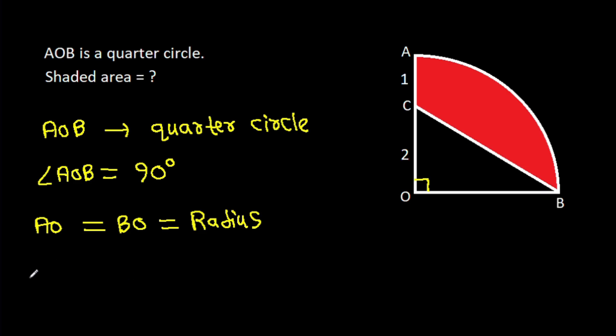AO is AC plus OC. AC is one and OC is two, so that equals three. That means BO will be three, since AO equals BO.